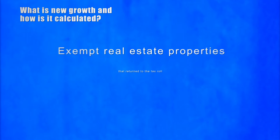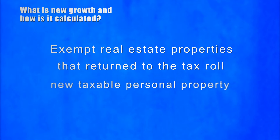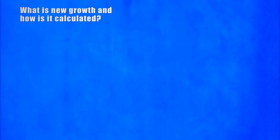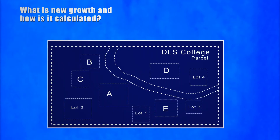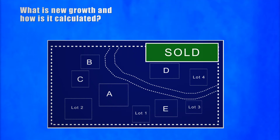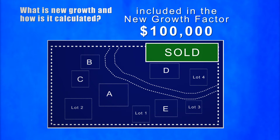The second category of tax-based growth is made up of exempt property returned to the tax rolls and new taxable personal property. For example, last year Parcel C was owned by a private college and was exempt from taxation. The college sold the parcel to a developer and it is returning to the tax rolls this year with an assessed valuation of $100,000. That $100,000 in added value to the community's tax base is included in the calculation of the new growth factor.